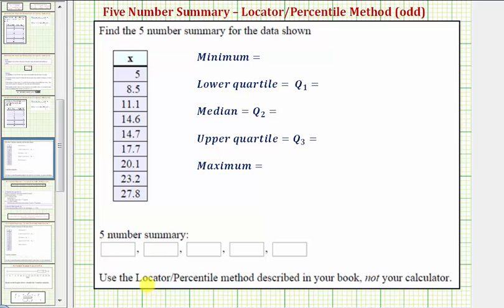Notice how we are asked to use the locator percentile method described in the textbook to determine Q1 and Q3. There is more than one method to determine Q1 and Q3, so we do want to make sure we use the correct method.